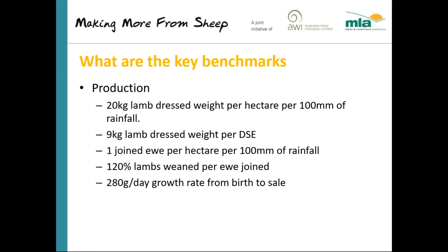If your business can achieve 20 kg lamb dressed weight per hectare per 100 mm of rainfall over the long term — some years better, some years slightly below — then you are set up for top 20% performance. Nine kilograms of lamb dressed weight per DSE, which is effectively 23 to 24 kilos per ewe joined. One ewe joined per hectare per 100 mm of rainfall — of all the production benchmarks, this one has the most influence. So in a 600 mm zone that's six ewes to the hectare joined; at 800 mm, eight ewes to the hectare.